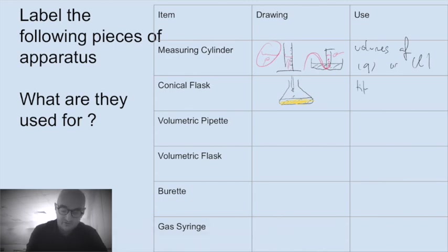A volumetric pipette, forgive my terrible art on this one, a volumetric pipette can be a range of volumes. It tends to be 25.0 cm cubed and that's again for titrations for measuring accurate volumes of liquids.